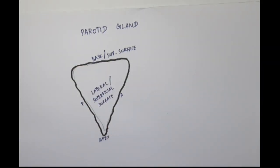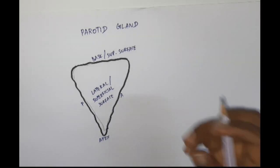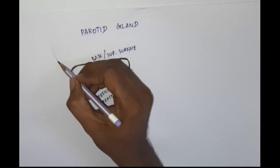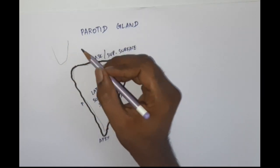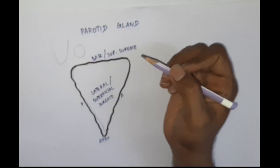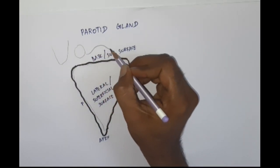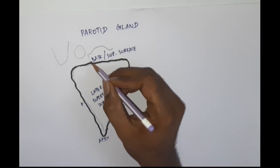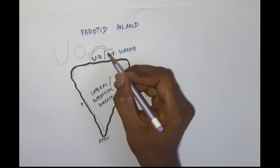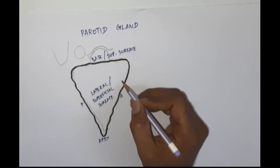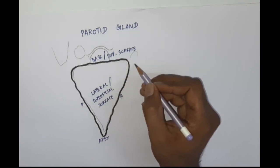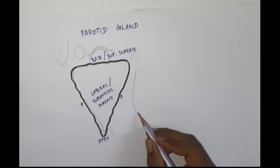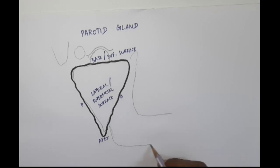A few things to note: here will be the location of the mastoid process. Just in front of the mastoid process will be the external acoustic meatus, and just in front of that will be the mandibular fossa. The condyloid process of the mandible will be here, and here will be the coronoid process in front — this accounts for the ramus of the mandible. The ramus of the mandible runs up, and this is the body of the mandible.